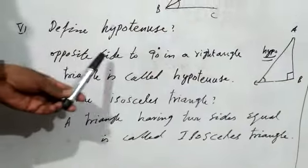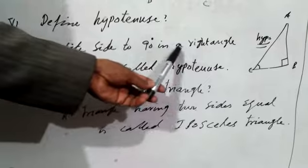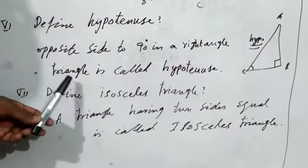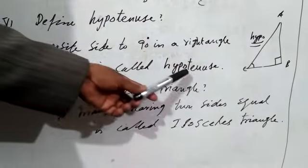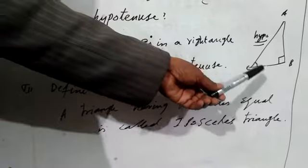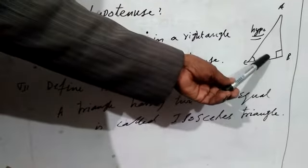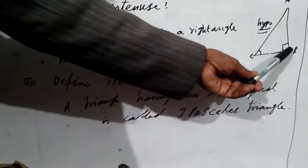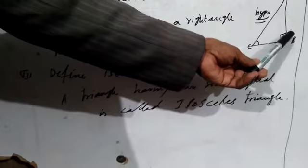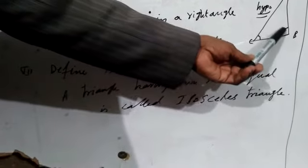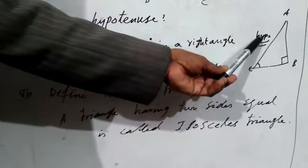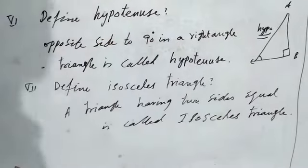The sixth definition is hypotenuse. The side opposite to the 90-degree angle in a right-angled triangle is called the hypotenuse. In this figure, angle B is 90 degrees, so the side opposite to it, which is side AC, is called the hypotenuse.